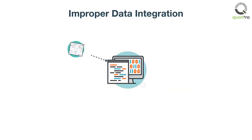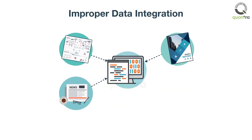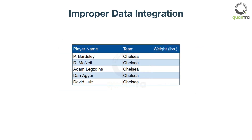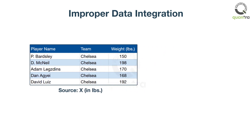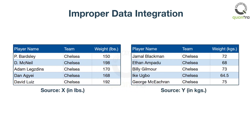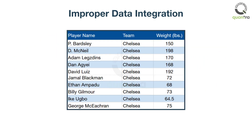Another cause is when data is collected from different sources and merged. For example, you require the weight of all EPL players in a single file. You extract the player's weight data from source X, but the weight data of some new players is not available, so you get it from source Y. The unit of weight measurement in source X is in pounds, and source Y is in kilograms. If data collected from both sources are combined as is, then there will be inconsistency in the data, and it will result in inaccurate data.